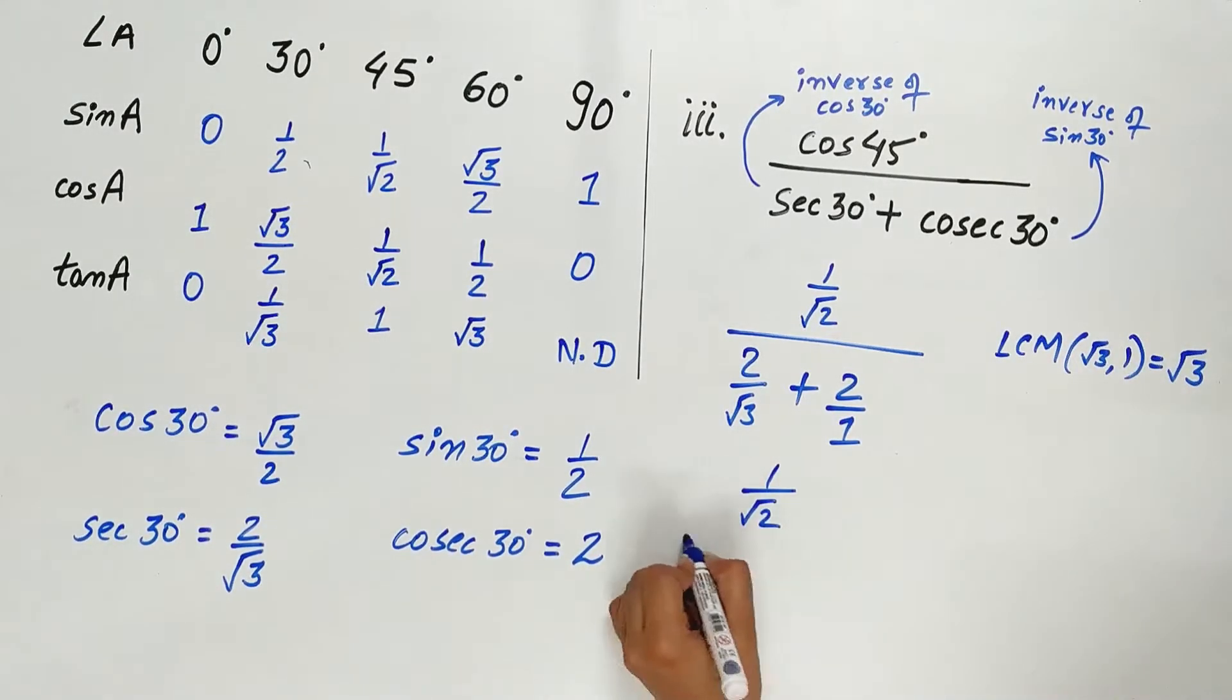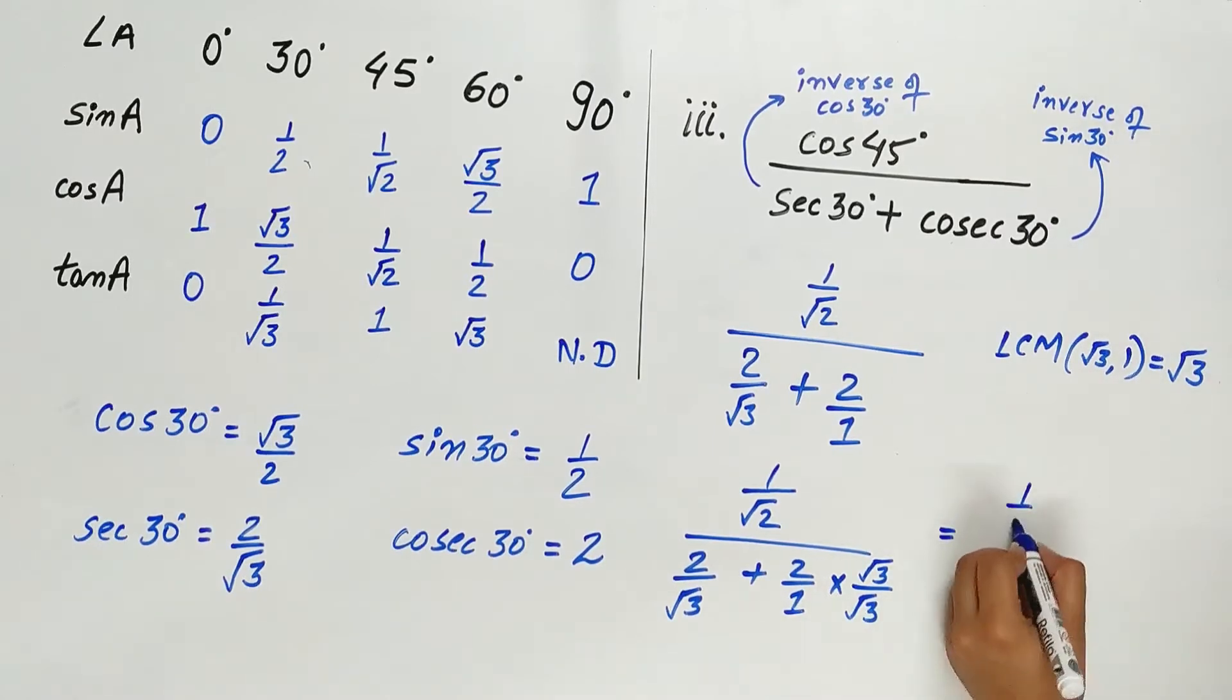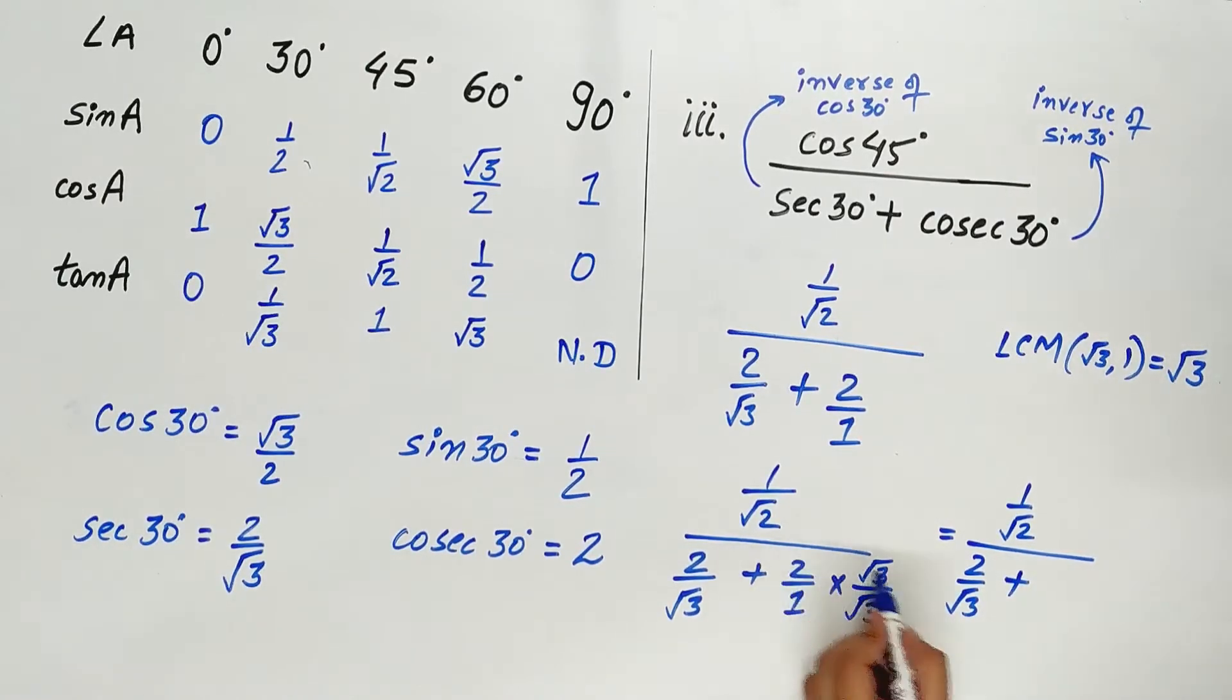1 by root 2 divided by 2 by root 3 plus 2 by 1 multiply and divide by root 3, which is equal to 1 by root 2 divided by 2 by root 3 plus 2 root 3 by root 3.